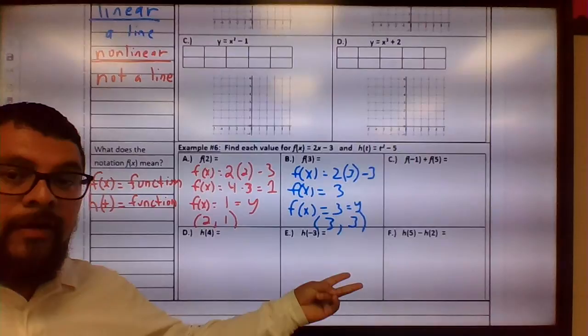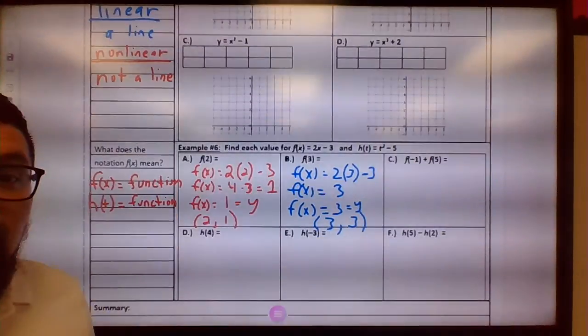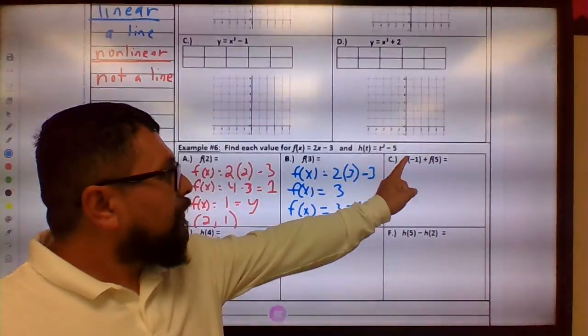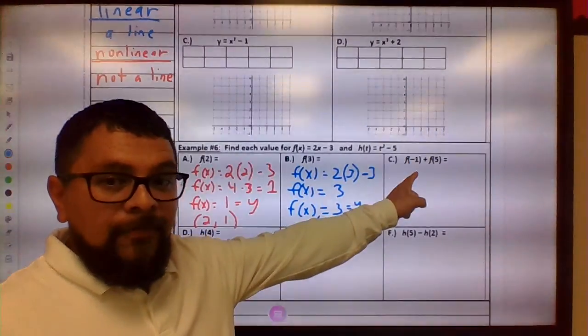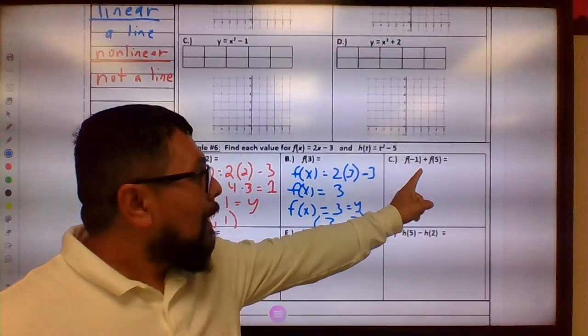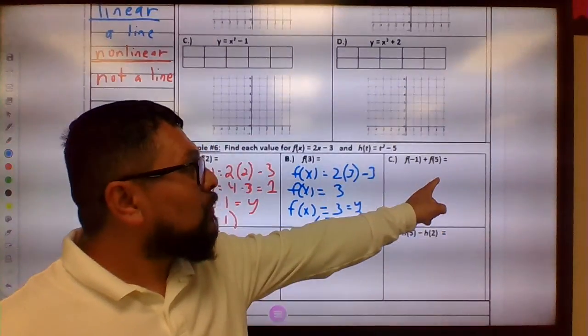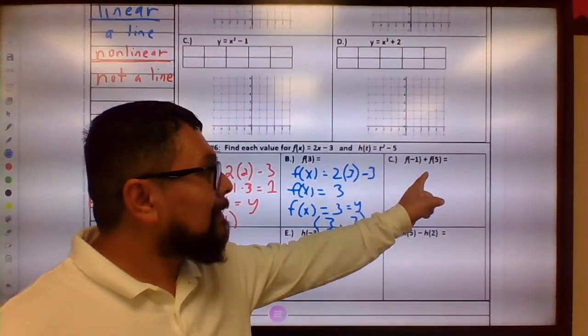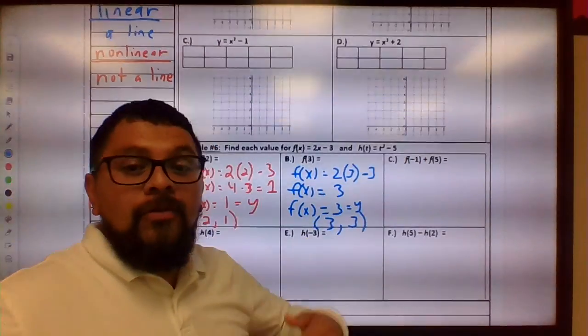We did these two on an earlier video, we're continuing on. For example 6C, we're going to take the function, this function right here, that function when x equals negative 1, and we're going to add it to the function when x equals 5. So F of negative 1 plus F of 5, let's go ahead and do it.